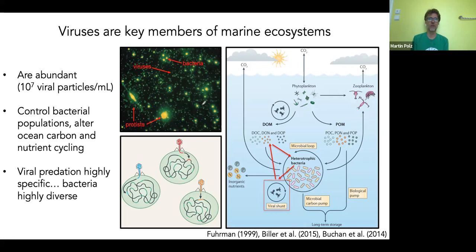In the surface ocean, you find about 10^7 viral particles per milliliter, which is about 10 times more than bacterial cells — viruses outnumber bacteria about 10 to 1 on average. It's often said that they control bacterial populations and alter ocean carbon and nutrient cycling through their lytic activity, lysing microbes and liberating nitrogen and phosphorus tied up in microbial biomass, making it available for new production.